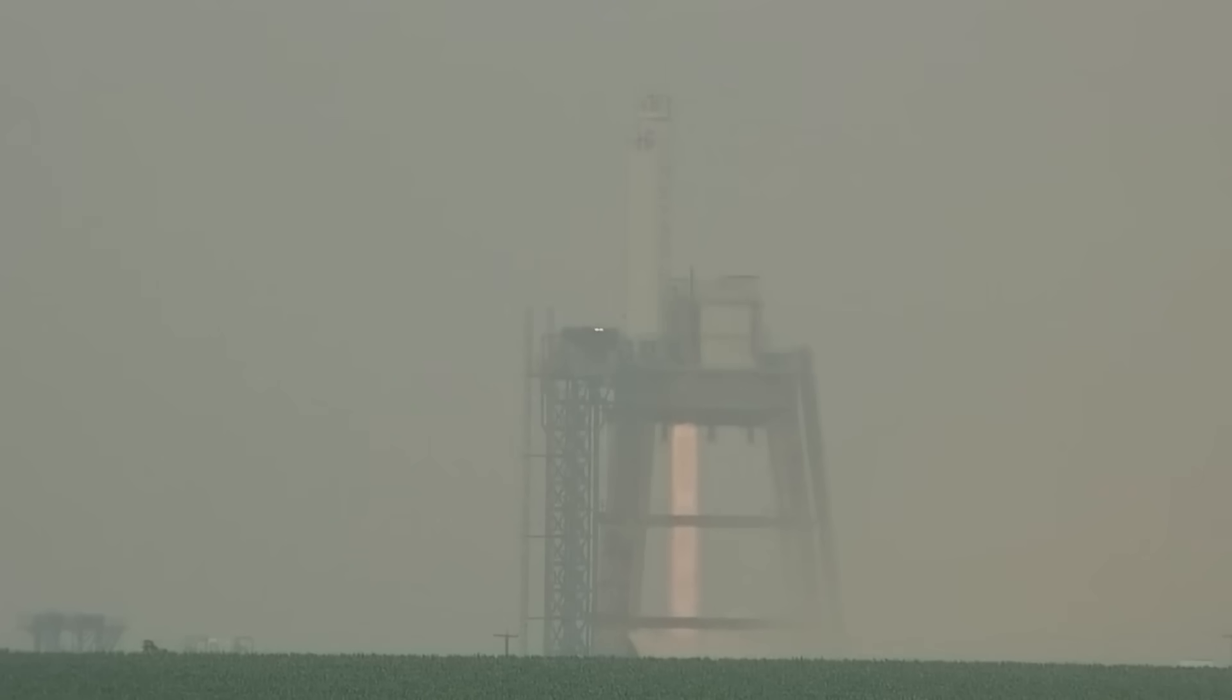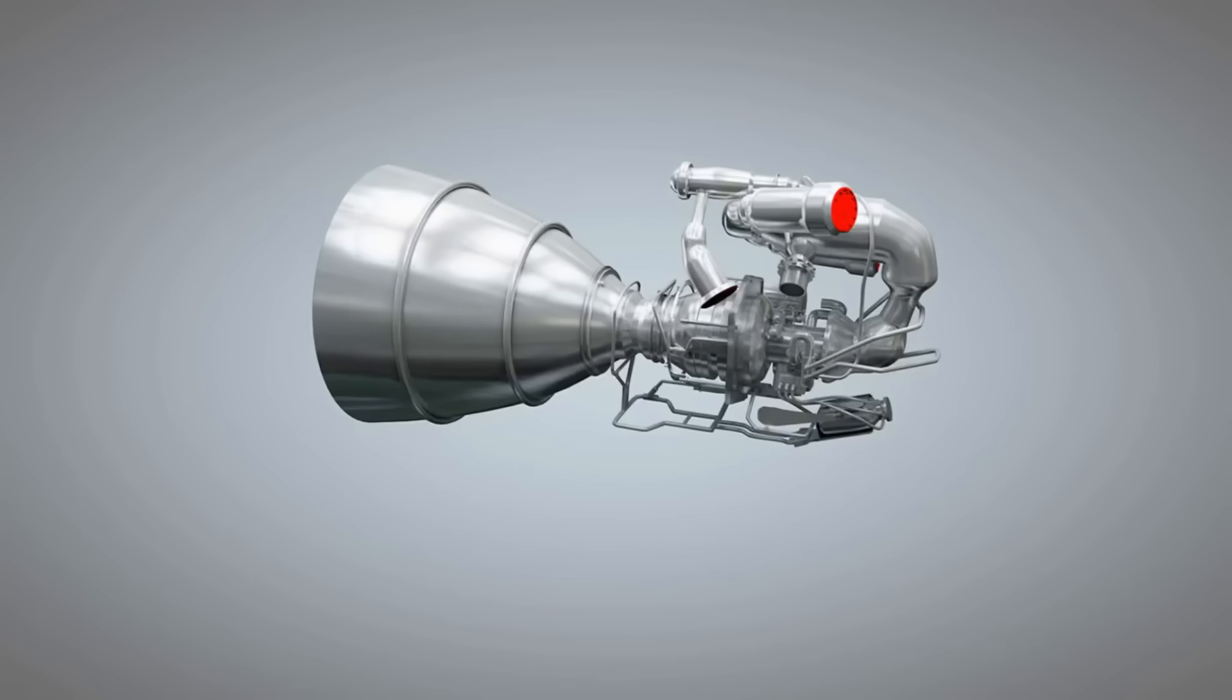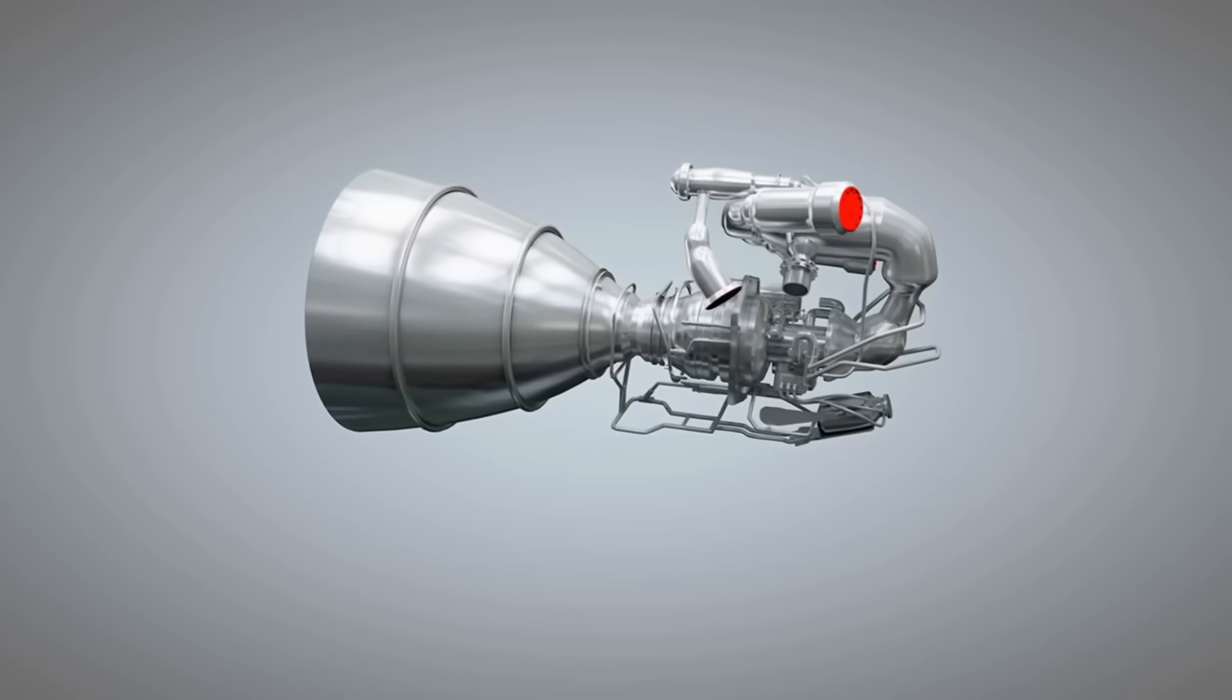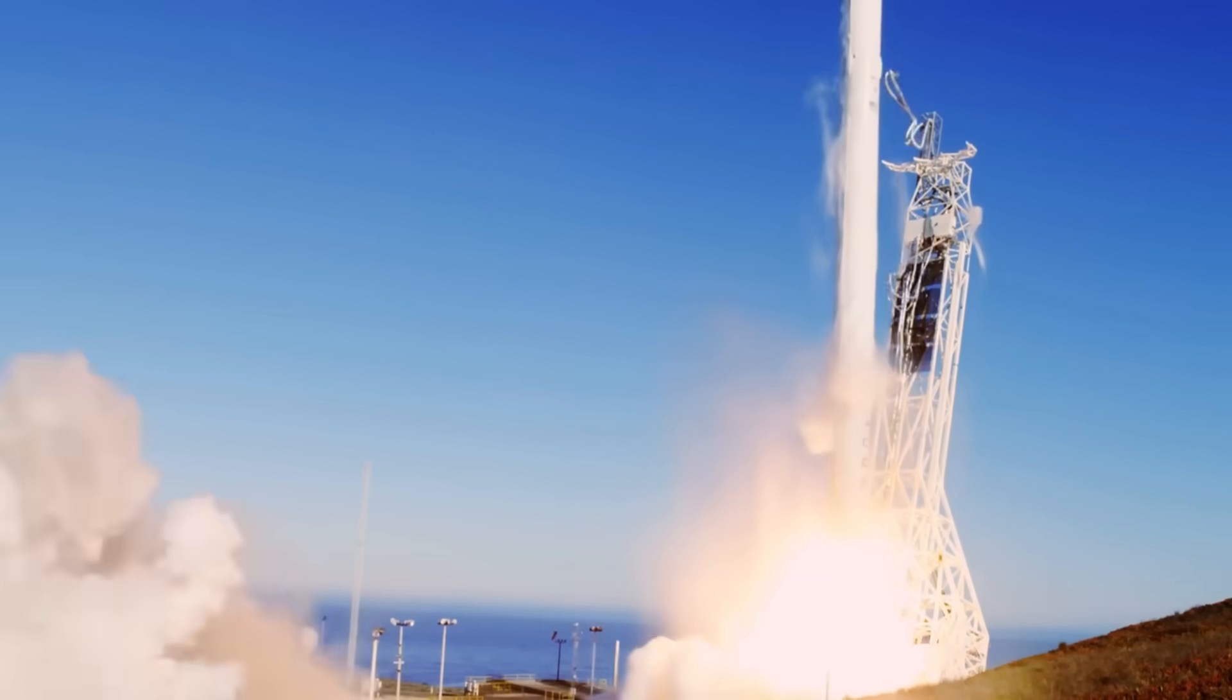Most rocket engines use what we call a gas generator cycle. SpaceX's Merlin engine, which powers the Falcon 9, uses this approach. It's like having a mini rocket engine that powers the pumps that feed the main engine. Simple, reliable, but not the most efficient. Some of your precious fuel gets wasted, burned just to run the pumps.